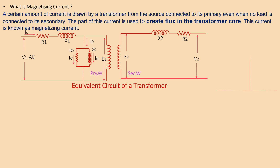This flux also links with the secondary winding and produces E2, the induced EMF at the secondary side. The small no-load current I0 taken by the transformer has two components: IM equal to I0 sin phi0 to magnetize the core, and IE equal to I0 cos phi0 to meet losses like hysteresis and eddy current loss, in addition to small copper loss in the primary. No copper loss occurs at the secondary as the transformer has no load. Induced EMFs in primary and secondary windings E1 and E2 lag behind the main flux phi by pi/2 or 90 degrees.